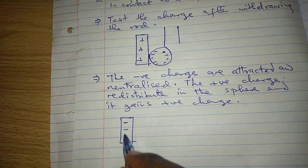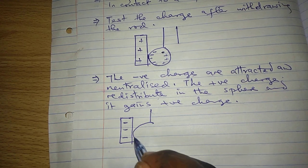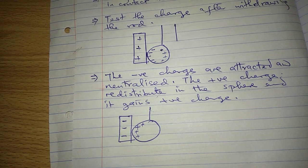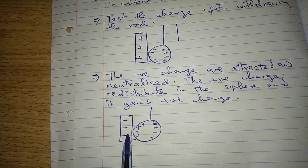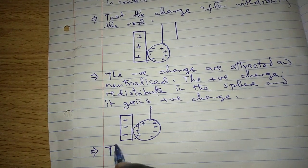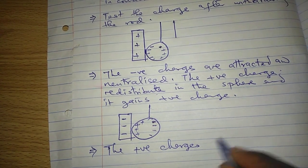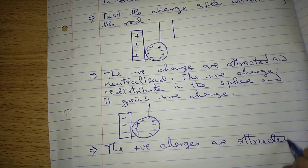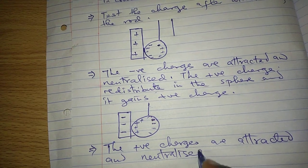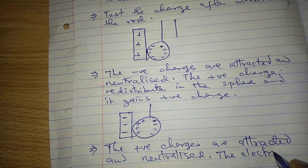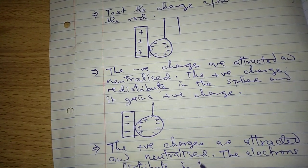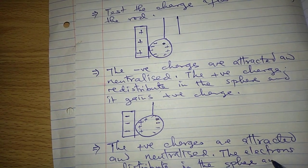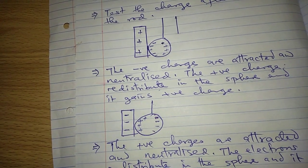On the other side, if we use a negatively charged rod and we bring it in contact with the spherical ball, you'll find it is the positive charges which will get attracted to that end where the rod is, but the negatives are being repelled on the other end. Therefore, the positives which get attracted to this end neutralize. The positive charges are attracted and neutralized. Once they are neutralized, we find because there are electrons, the electrons redistribute themselves in the sphere.